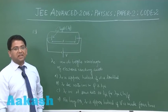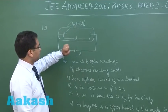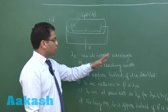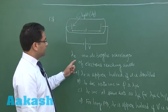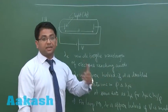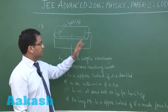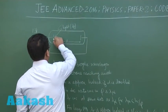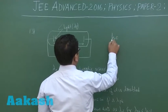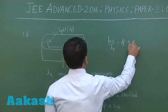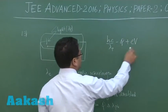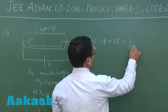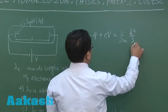Question 13 is from modern physics. Here is a photoelectric setup: light has wavelength lambda_P for the photon, and lambda_E is the minimum de Broglie wavelength of electrons reaching the anode. When the wavelength is minimum, momentum is maximum, meaning we are interested in the maximum kinetic energy. The maximum kinetic energy equals the work function plus eV, and P squared over 2m, where P equals h divided by lambda_E.